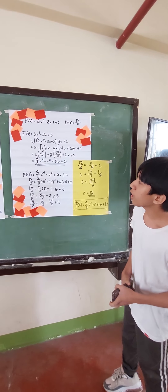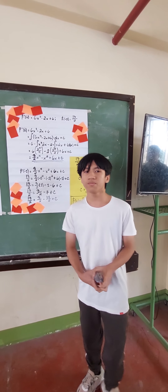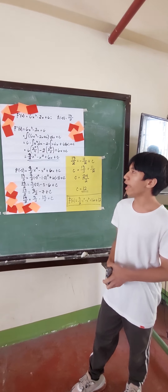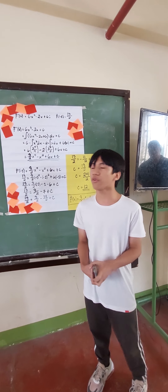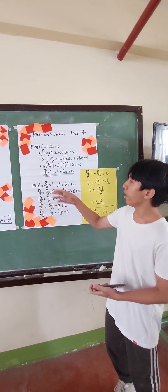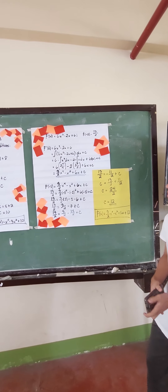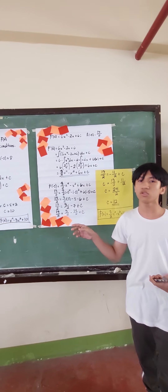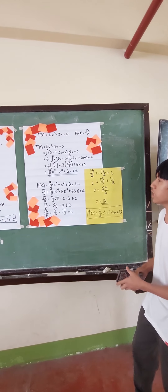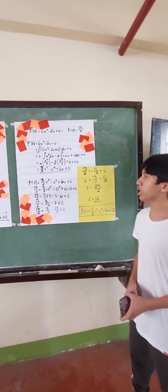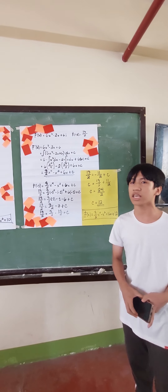So 6 over 4 simplifies to 3 over 2. And we cancel the 2 in the x squared term. So we have f of x equal to 3 over 2 times x to the 4th minus x squared plus 6x plus c.